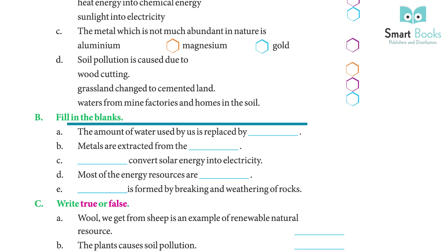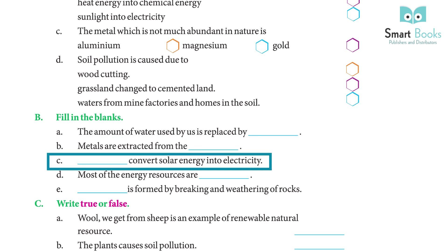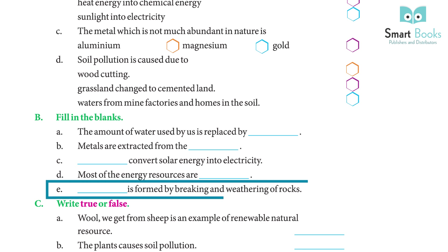Fill in the blanks. a. The amount of water used by us is replaced by rain. b. Metals are extracted from ores. c. Solar cells convert solar energy into electricity. d. Most of the energy resources are non-renewable. e. Soil is formed by breaking and weathering of rocks.